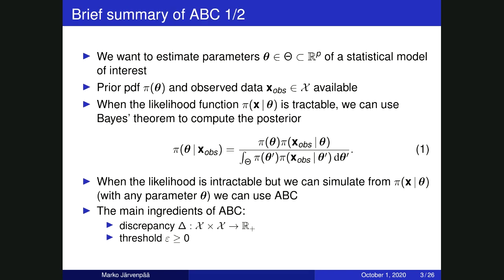I guess most of you are already quite familiar with Bayesian inference and ABC, but I thought I'd still start from the beginning, mainly to set up some notation and terminology. Our goal is to estimate some parameters theta of a statistical model of interest, and we have a prior PDF and some observed data available. When the likelihood function is tractable, we can use Bayes' theorem to compute the posterior and then combine it with MCMC or variational inference to carry out the inference.